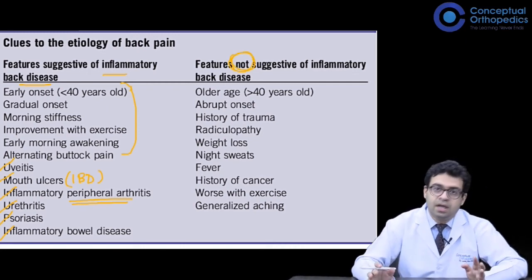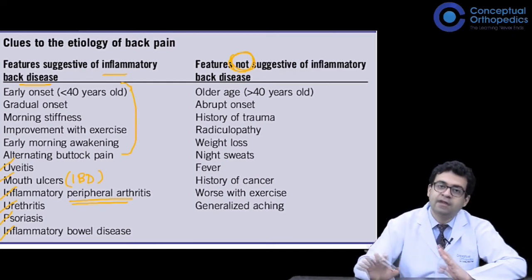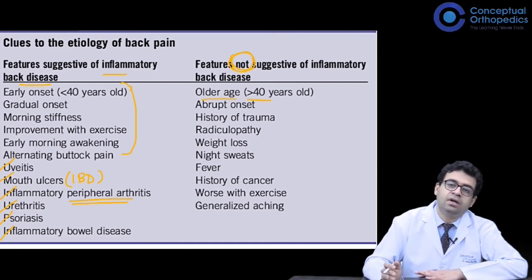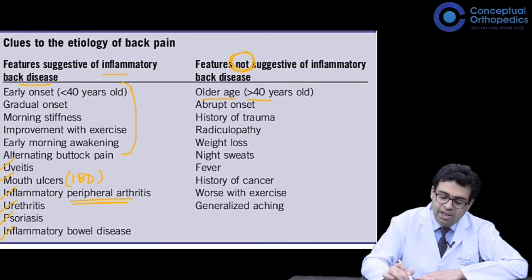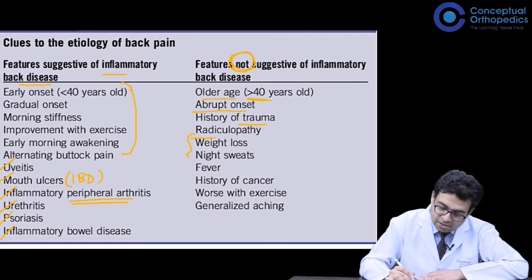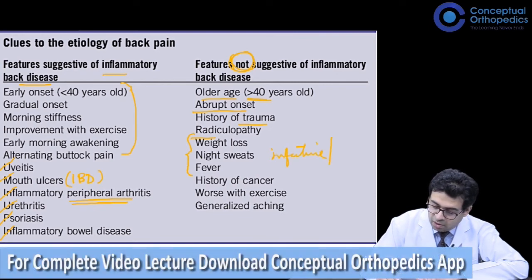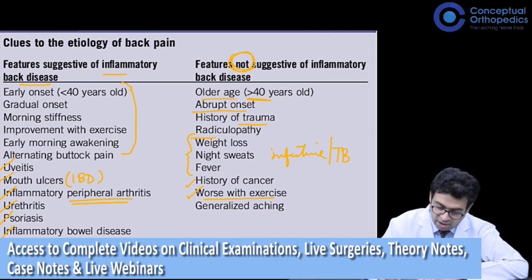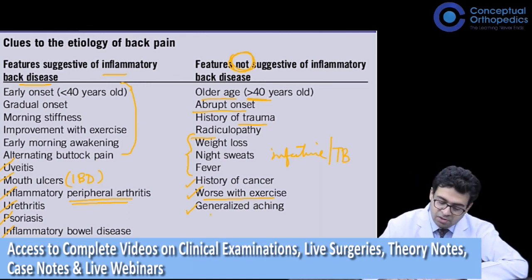Features not suggestive of inflammatory back pain are also important to know. Older age of onset is less typical, though symptom onset is usually under 40 years. Abrupt onset, history of trauma, and radiculopathy are usually not related to ankylosing spondylitis. Fever, night sweats, and weight loss could indicate infective pathology or tuberculosis, which is common in the Indian scenario. History of cancer could suggest metastasis. Since inflammatory back pain almost always improves with exercise, worsening with exercise is not in its favor. Back pain associated with generalized aching is also not characteristic.